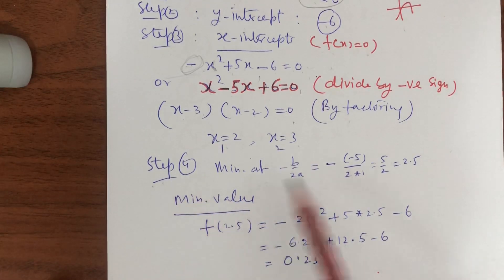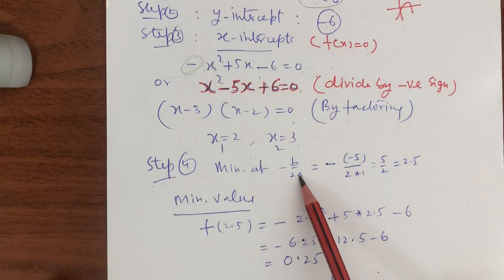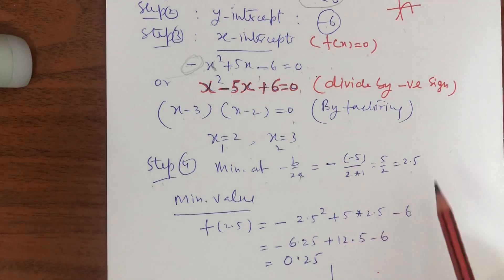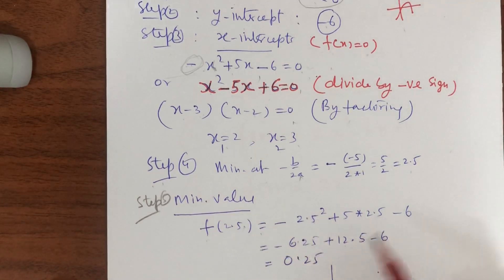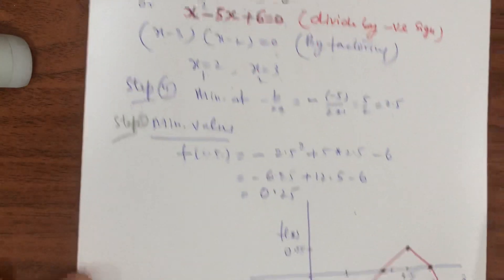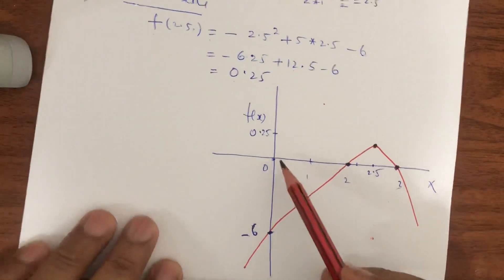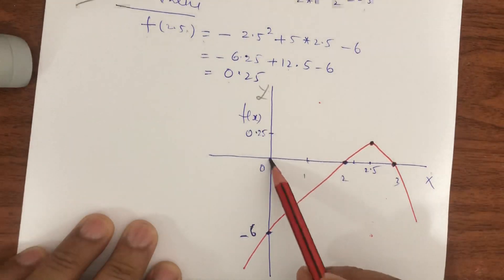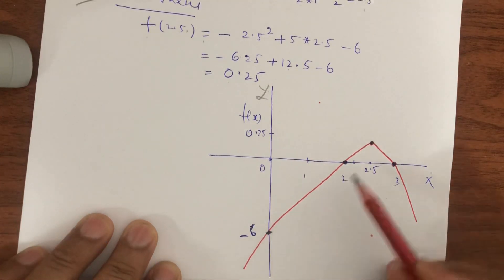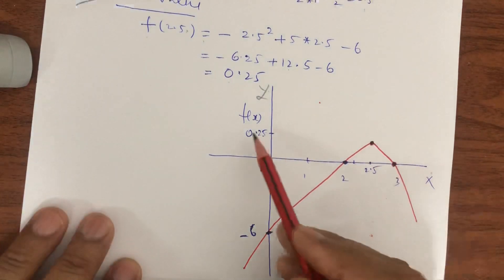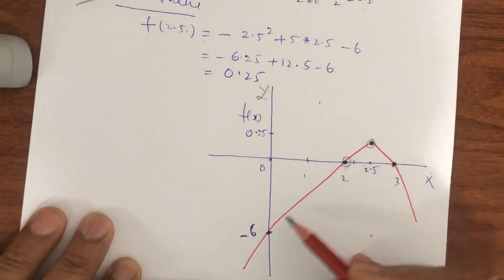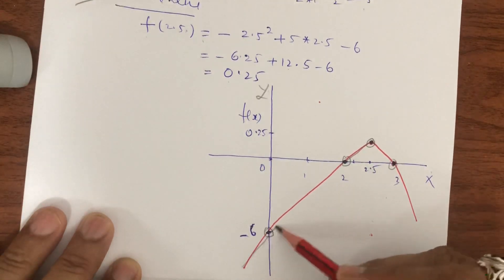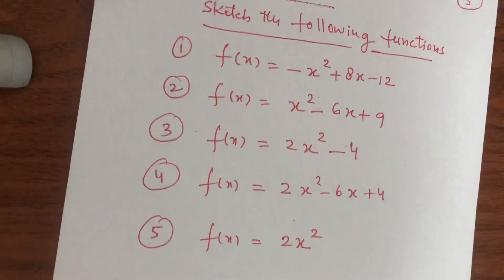Step 4: minimum x = -b / 2a = -5 / (2 × -1) = 2.5. Step 5: f(2.5) = -(2.5)² + 5(2.5) - 6 = +0.25. Plotting the points — y-intercept at -6, x-intercepts at 2 and 3, turning point at (2.5, 0.25) — and joining them gives the sad parabola curve.